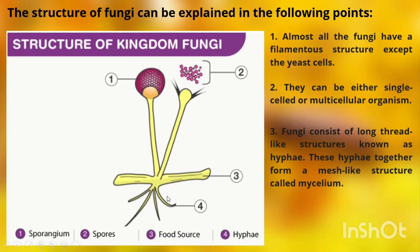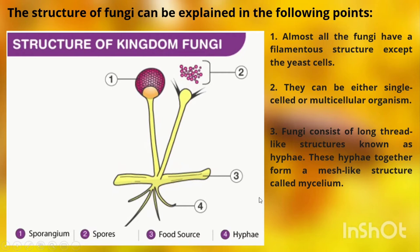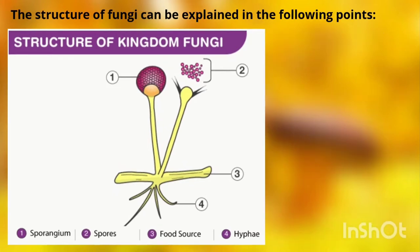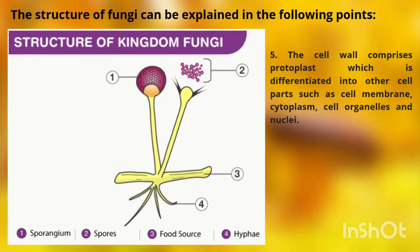This is the hyphae and this is the mycelium. Fungi possess a cell wall which is made up of chitin and polysaccharides. The cell wall comprises protoplasts which are differentiated into other cell parts such as cell membrane, cytoplasm, cell organelles, and nuclei.